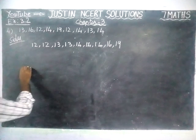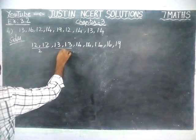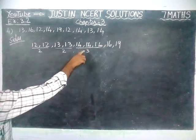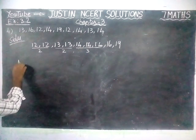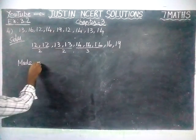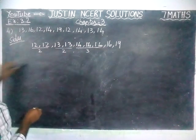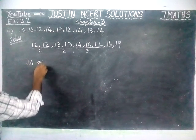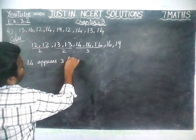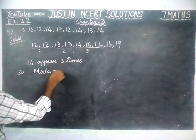Now we are going to find the mode of the given data. We count: 12 appears 2 times, 13 appears 2 times, 14 appears 3 times. So the highest number of times is 14. Therefore, mode is equal to 14.